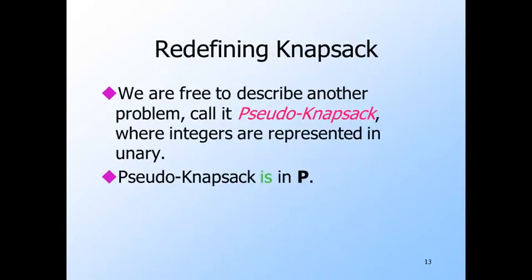There is another problem called pseudo-knapsack where the question is the same but the integers are represented in unary rather than binary — integer i is represented by i ones followed by a marker symbol. This problem is in P, and the dynamic programming algorithm proves that. But it is not the classical knapsack problem where integers are represented in binary, which is the rational way to represent large integers.